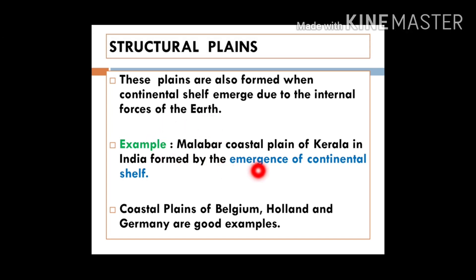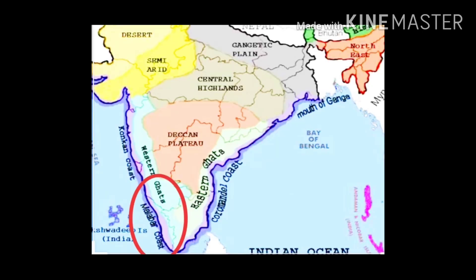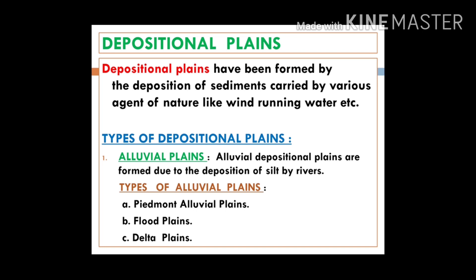A very good example of such a plain in India is the Malabar Coastal Plain of Kerala, formed by the emergence of the continental shelf. The continental shelf is the area of the continent just below the water where the continent ends and the ocean begins. When that region is uplifted due to tectonic movement, such plains are formed. This is the Malabar Coastal Plain in India.